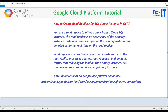Read replicas do not provide failover capabilities — that's one of the things you need to remember. In other words, when you create read replicas, they are essentially availability groups. You have a primary SQL Server instance, and once you enable read replicas, GCP creates availability groups. Your primary replica becomes primary for the availability group, and then you have secondaries created out of that.